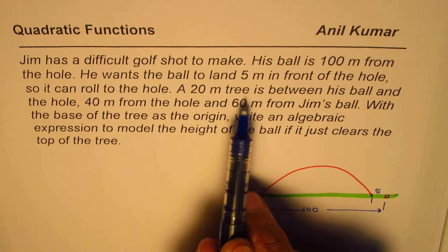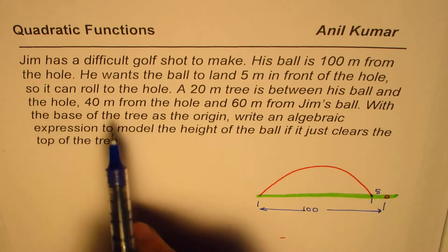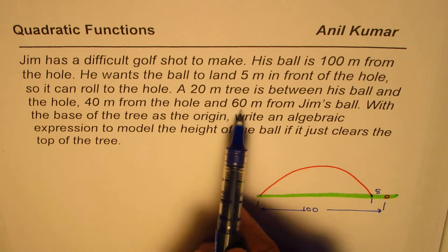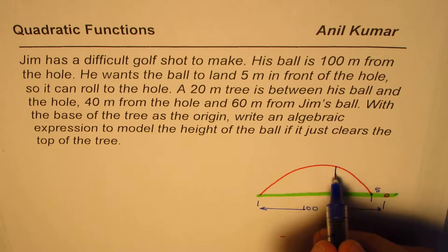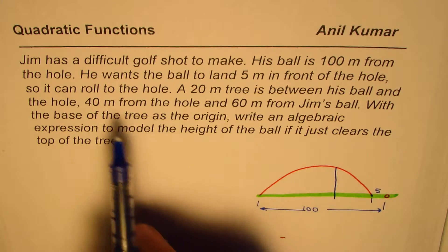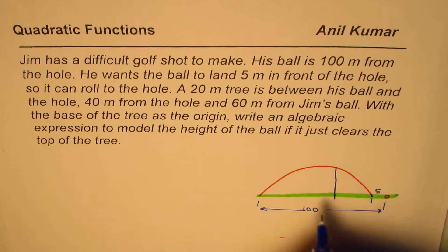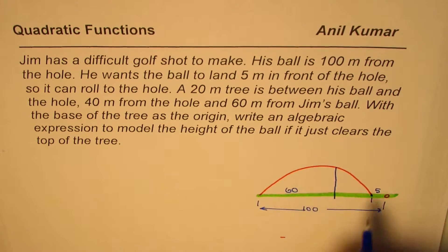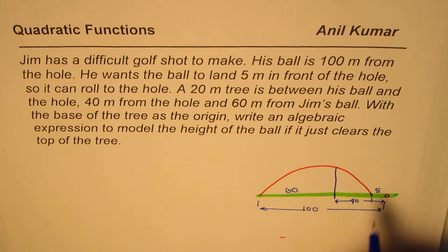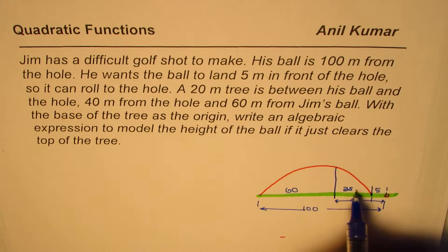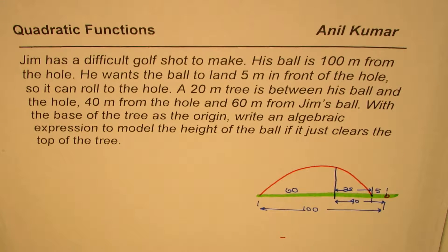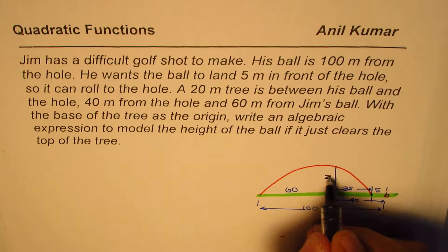A 20-meter tree is between his ball and the hole, 40 meters from the hole and 60 meters from Jim. So the tree is closer to the hole. This distance from Jim to the tree is 60 meters, and this distance from the tree to the hole is 40 meters. The ball should land 5 meters from the hole, so from the base of the tree, the landing distance is 35 meters. The height of the tree is 20 meters.